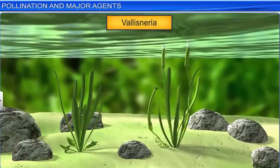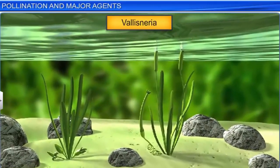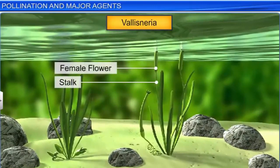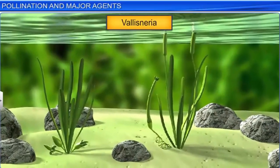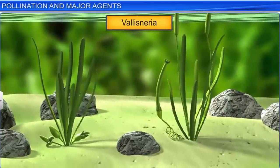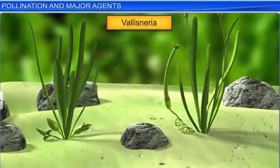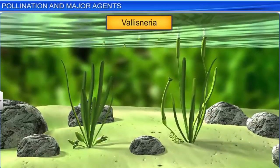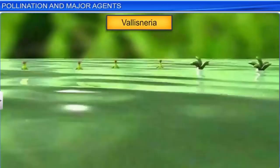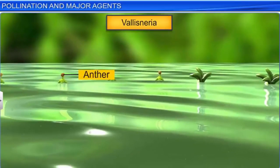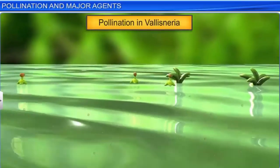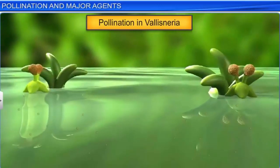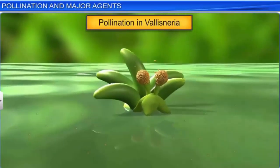In Vallisneria, for example, the female plant produces a long-stalked female flower that reaches the surface of the water. The male plant remains submerged in water, where it produces several tiny floral buds. Upon maturing, the buds rise to the water's surface and open up to expose the anthers. Pollen released from the anthers is carried by water currents, where some of them eventually come in contact with the stigma.